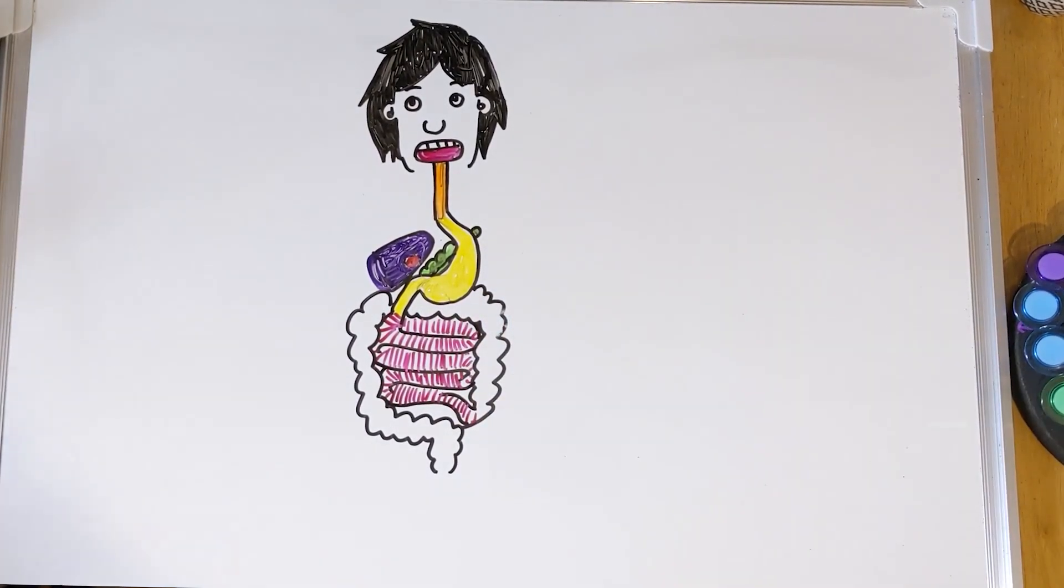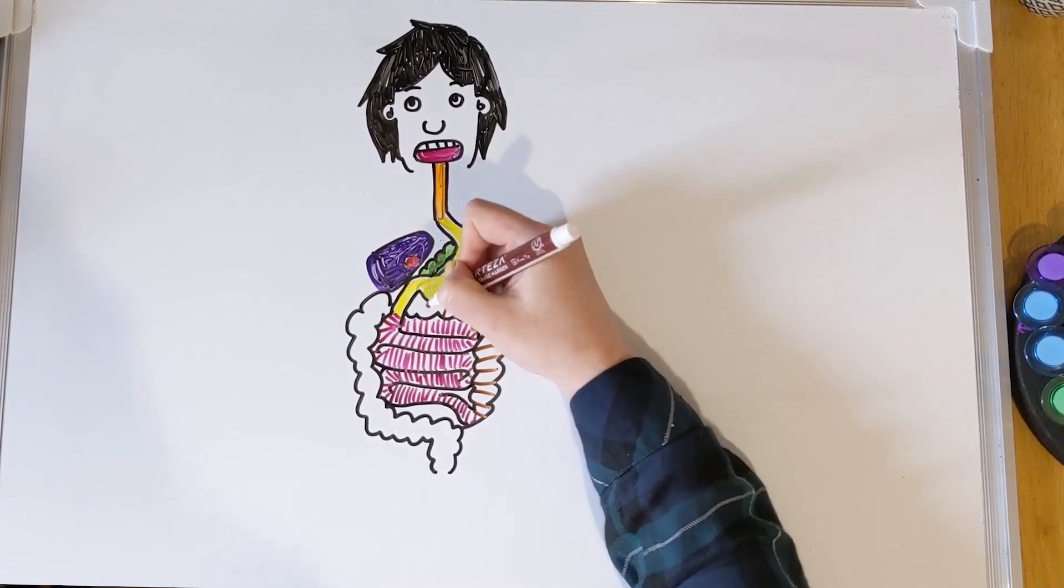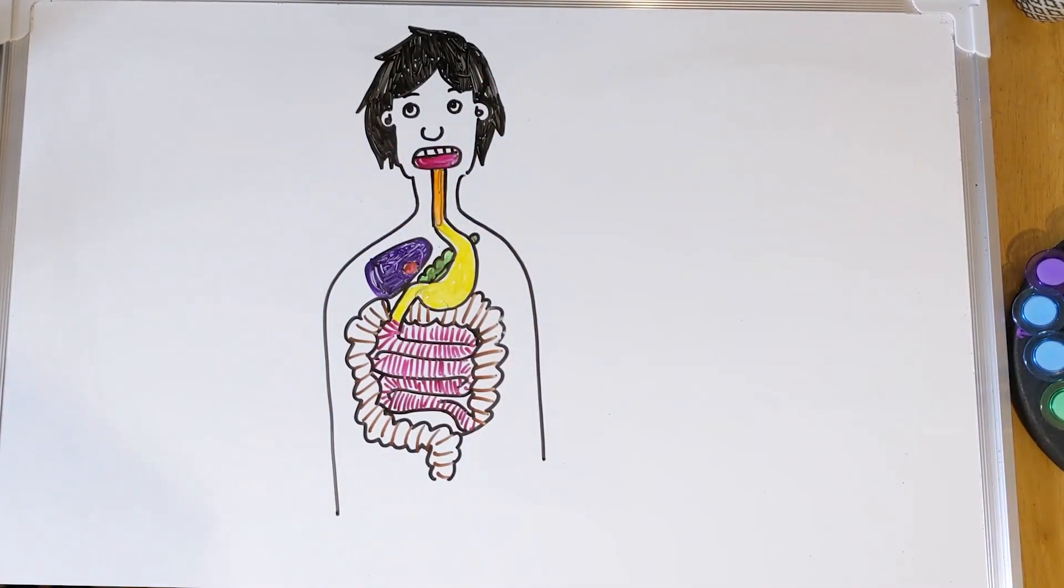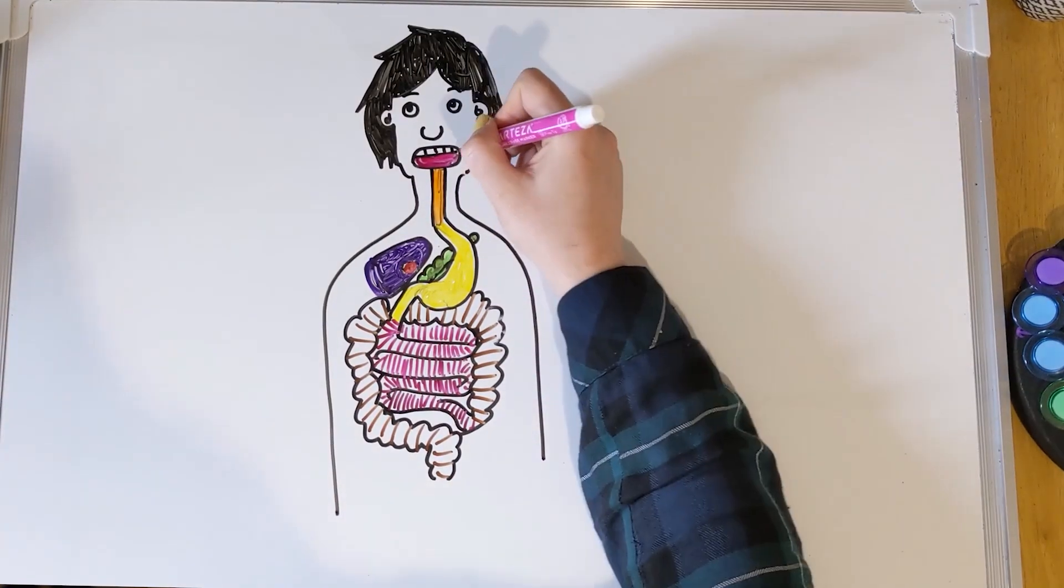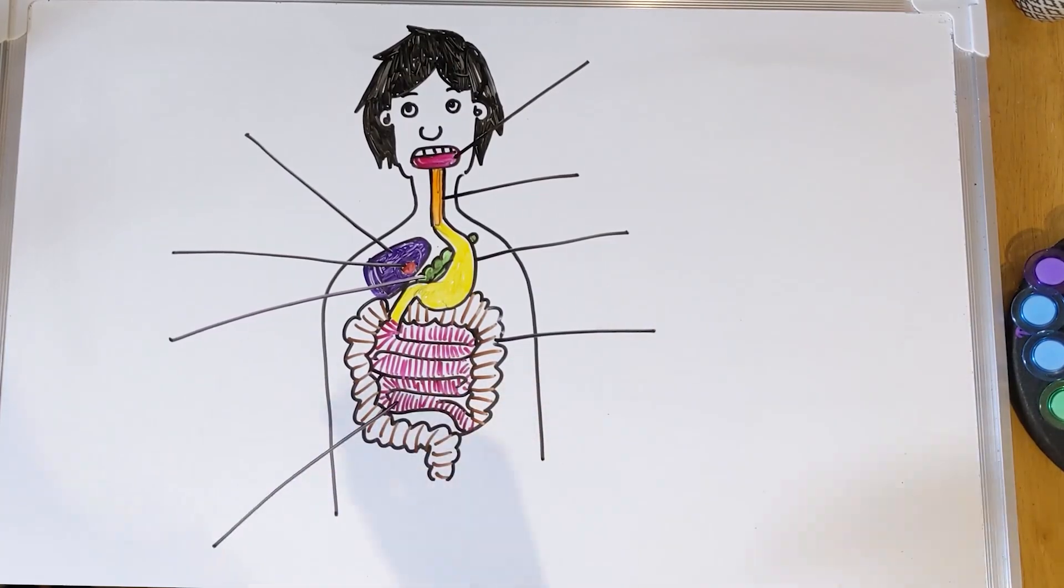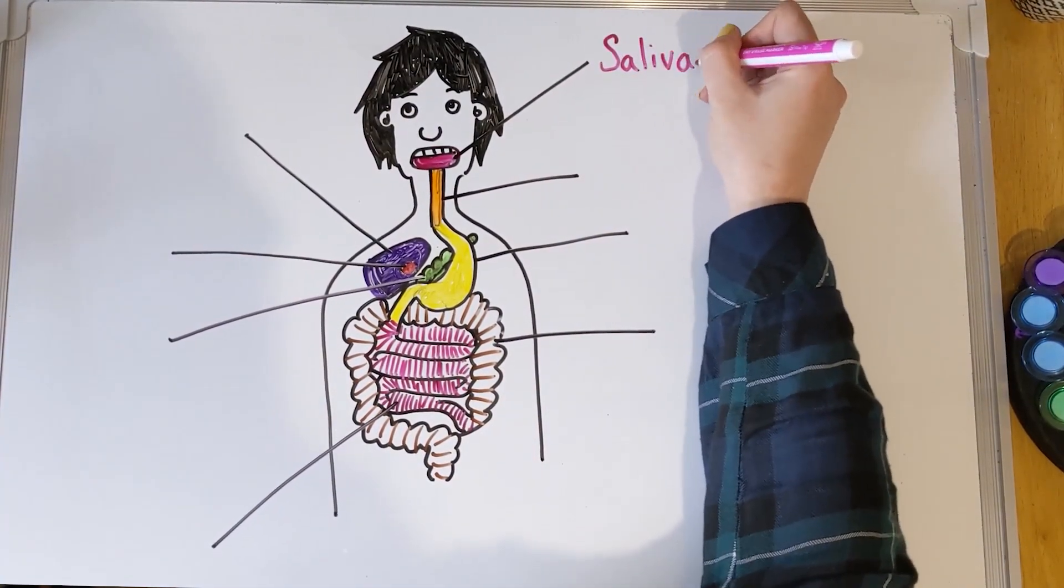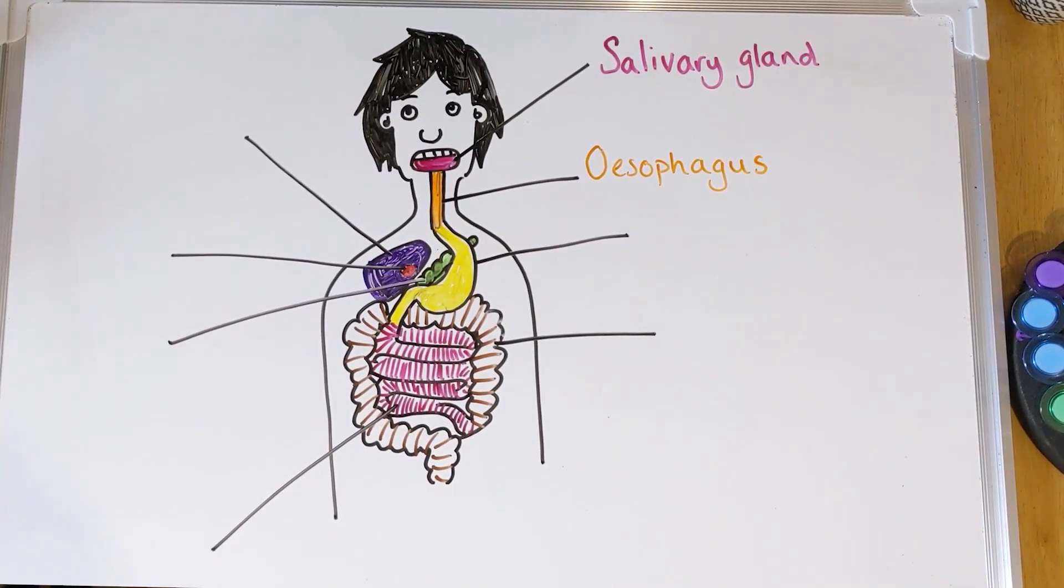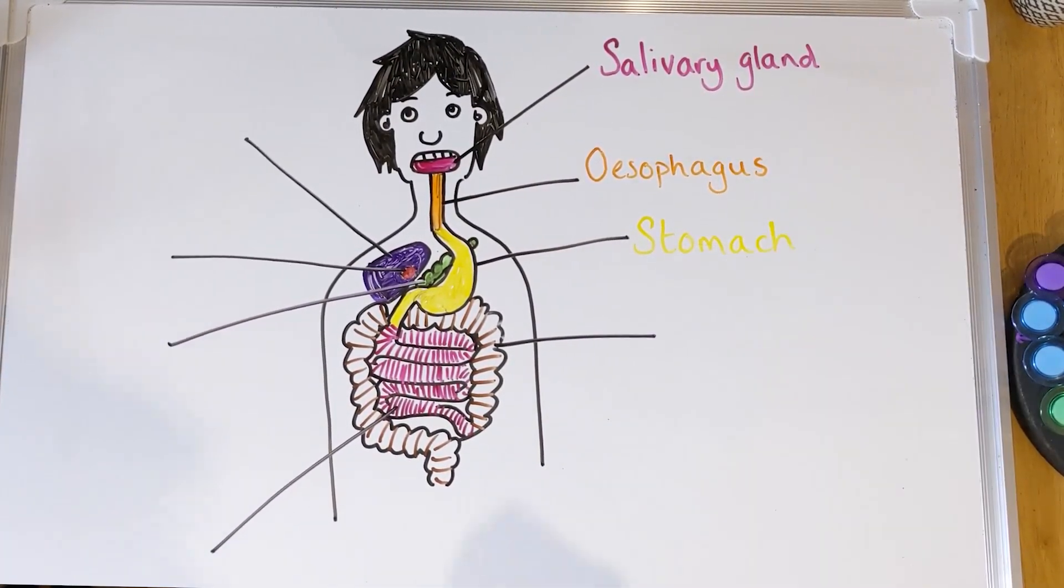Then other ones that aren't part of the digestive system in the fact that food doesn't actually go through them - you have the liver, which is the big bit in purple. The liver is where lots of different chemicals are made to help with the digestion, but here we are concerned with bile that it makes, which helps to break down fat. On the liver, or just attached to it, you've got something called the gallbladder, which is where all that lovely bile is stored.